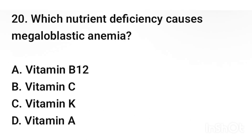Question number 20. Which nutrient deficiency causes megaloblastic anemia? The correct answer is option A: Vitamin B12.